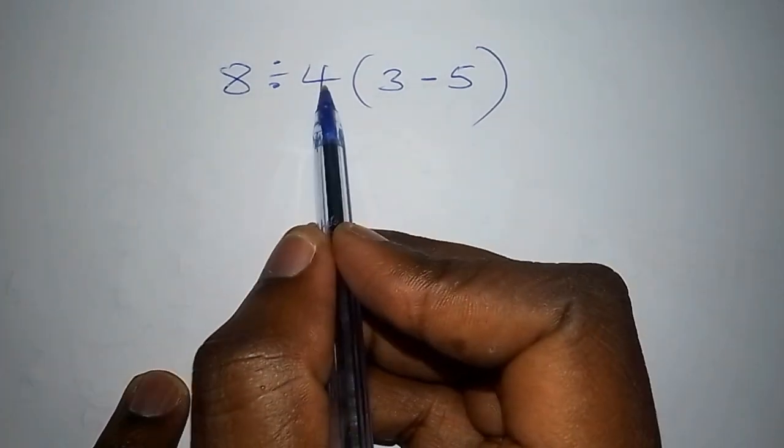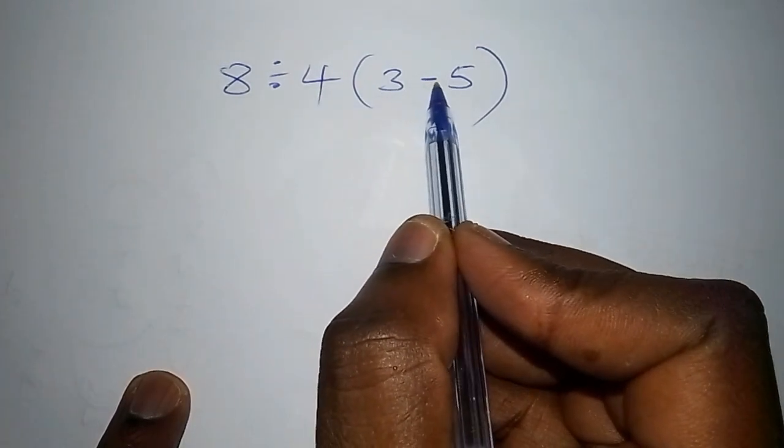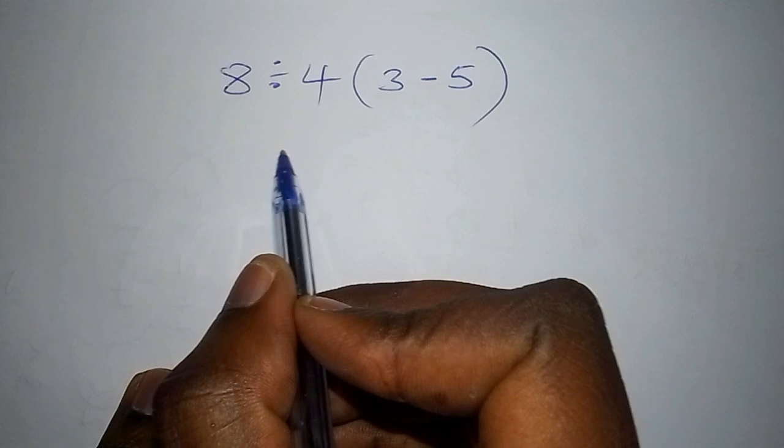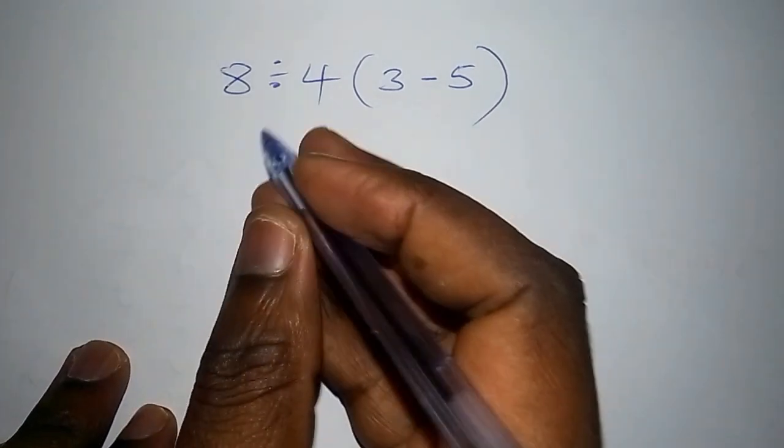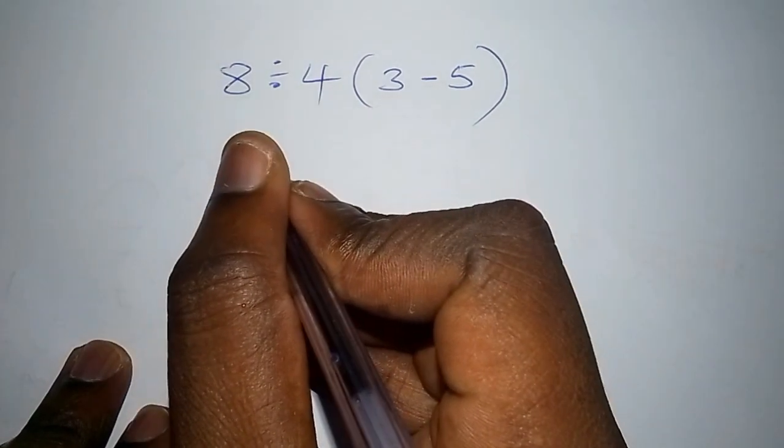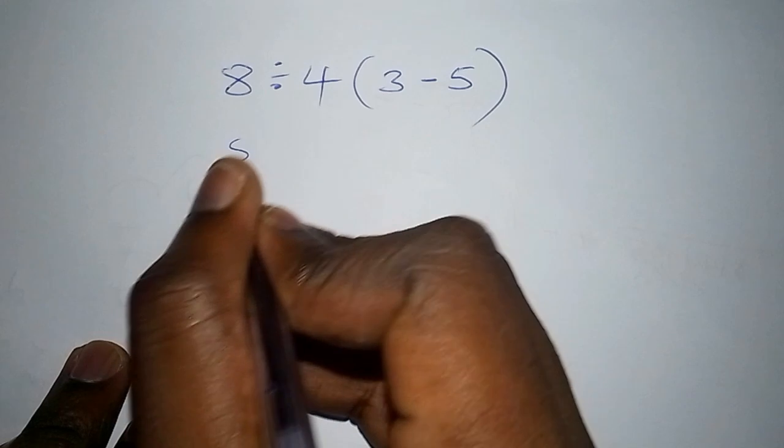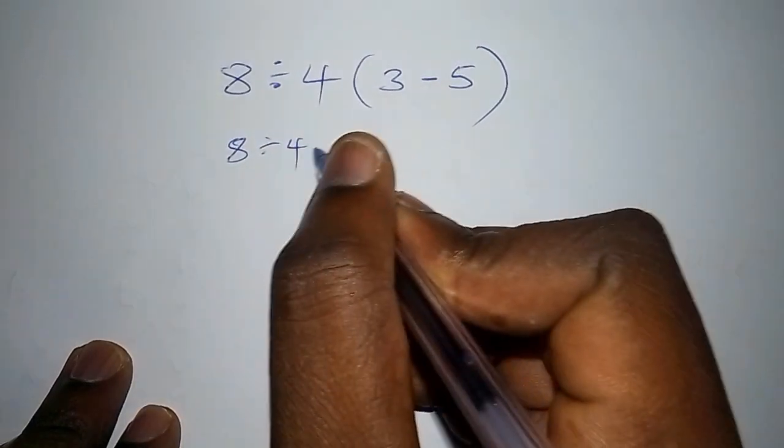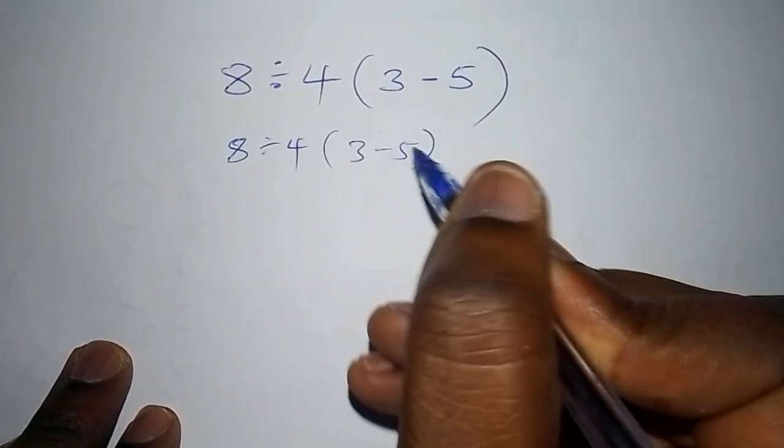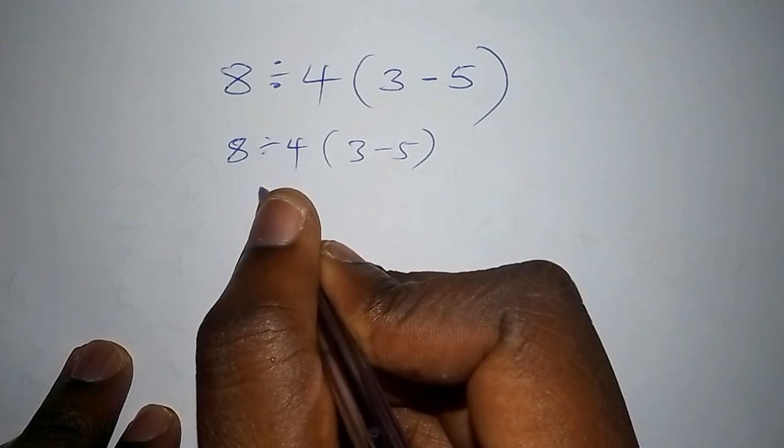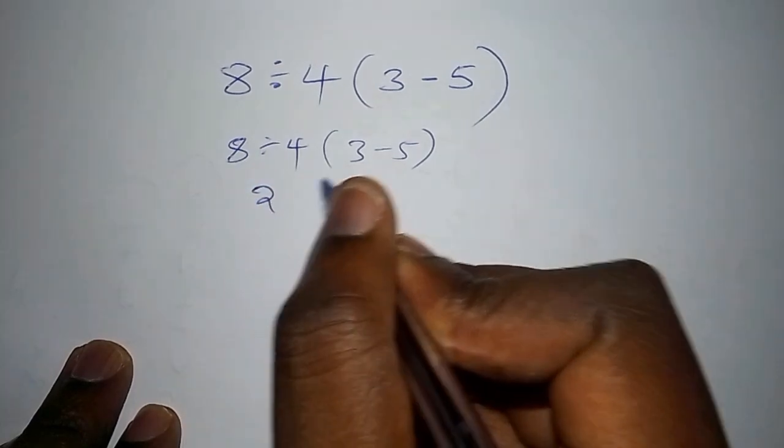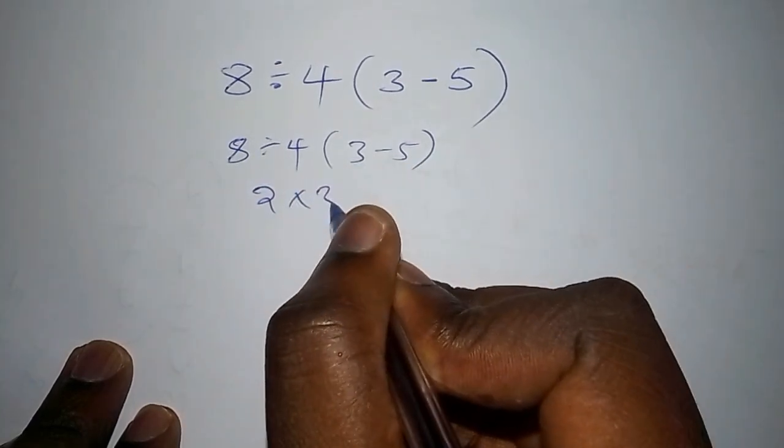Hello everyone, we have 8 divided by 4 into bracket 3 subtract from 5. Please don't make this mistake of trying to work out this math problem and say 8 divided by 4 into bracket 3 subtract from 5, where 8 divided by 4 is 2, then 2 multiply by 3 subtract from 5.